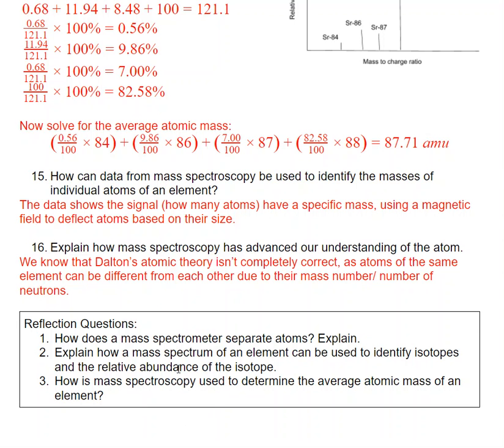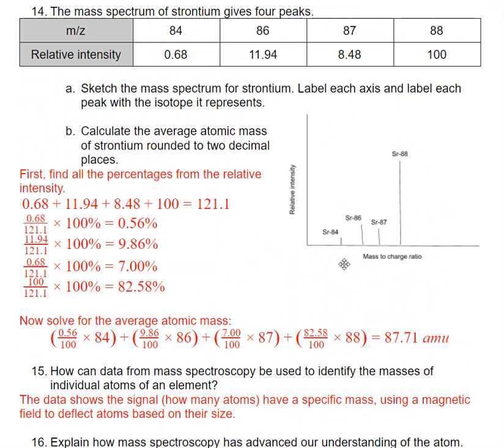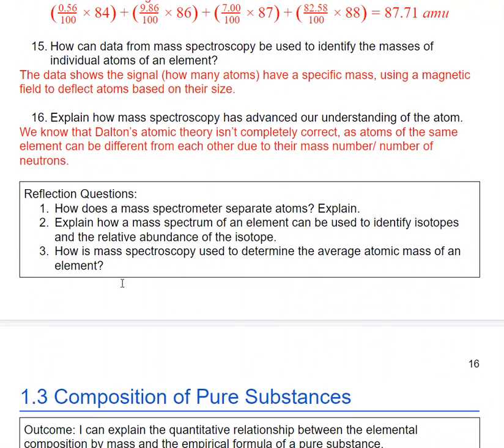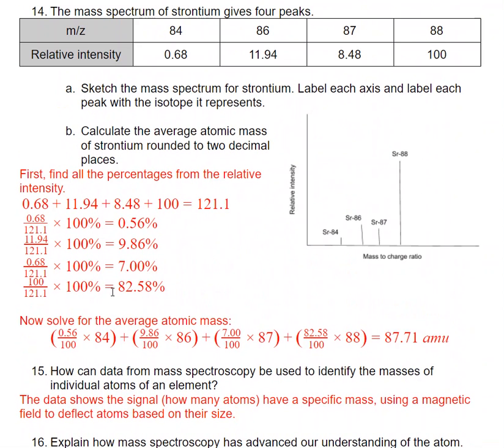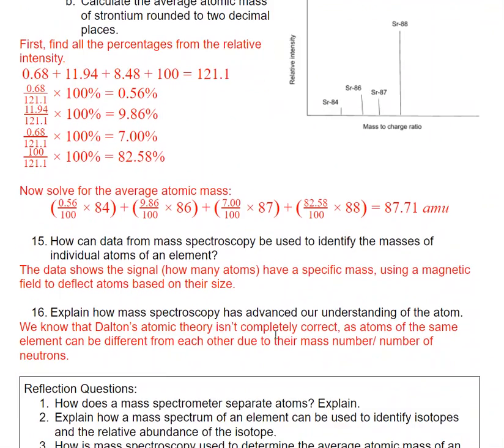Your reflection questions: how does a mass spectrometer separate atoms? So there's a couple of questions that went over the process. How can I use it to identify isotopes and the relative abundance of the isotopes? That's literally what you did in question 14. You use this mass spec, this data, to get relative intensity and then to get our average atomic mass. So how is mass spec used to determine the average atomic mass of an element? Again, it's exactly what you did in question 14. We convert those relative intensities to percents, and then we can solve for our average atomic mass.